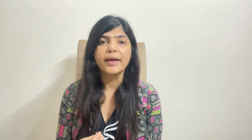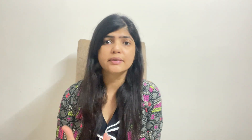There are two basic kinds of diabetes. Type 1 is where the body is not able to produce insulin. Type 2 is where the body is not able to use insulin properly. Insulin is an element produced in our pancreas, which is an organ in our body.